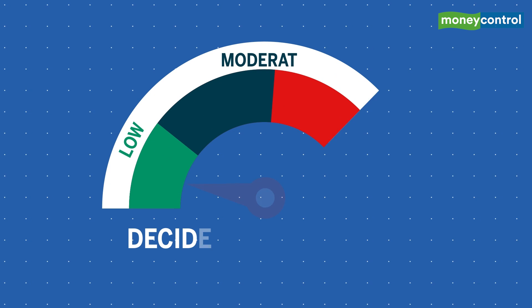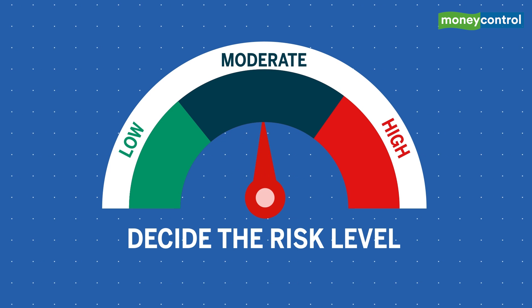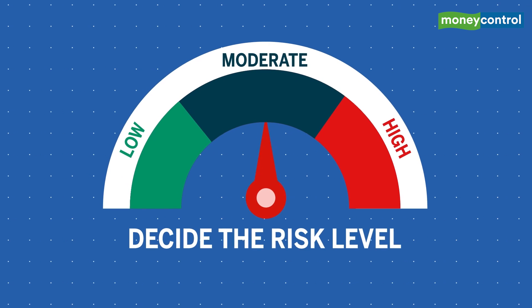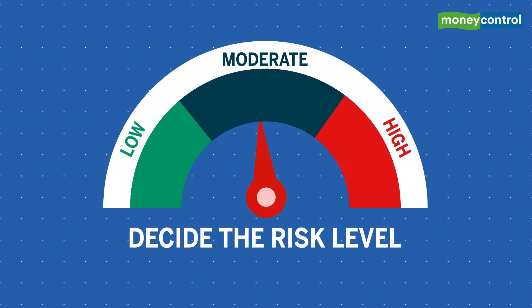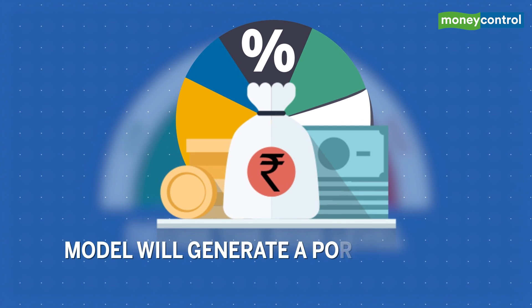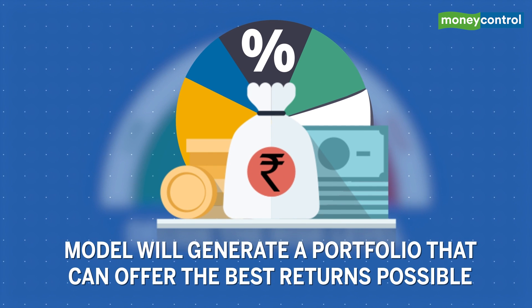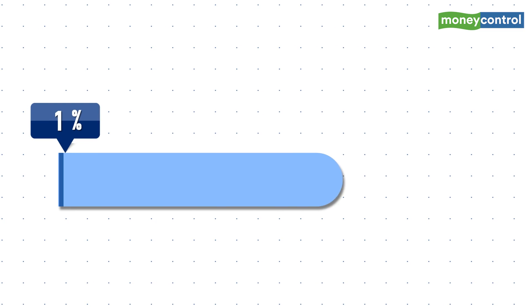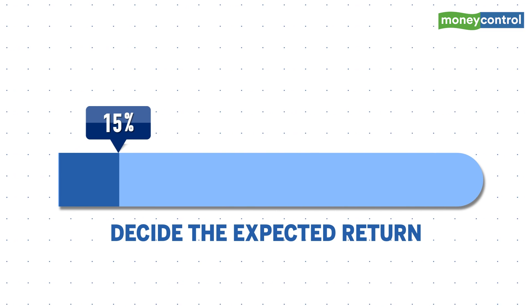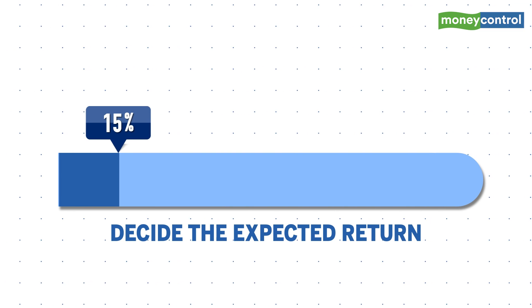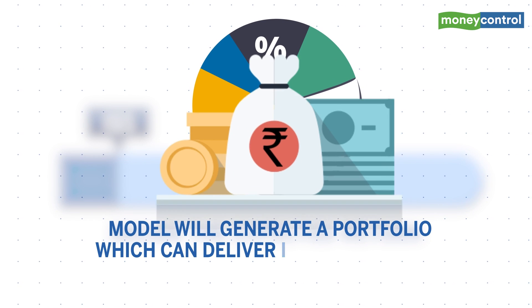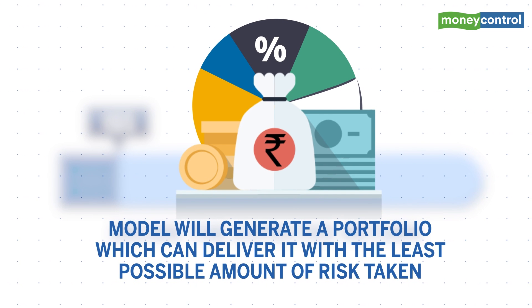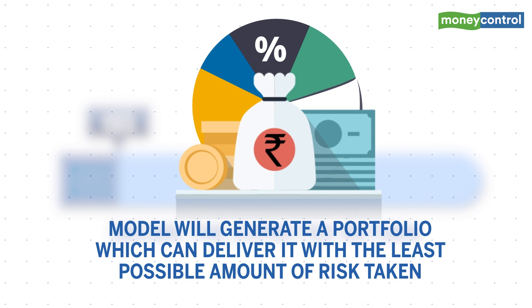So what does this mean? It means that an investor should decide the risk level they are prepared to take, and based on that, the model will generate portfolios which can offer the best returns possible. Alternatively, an investor can decide the expected return and then compute a portfolio which can deliver it with the least possible amount of risk taken.